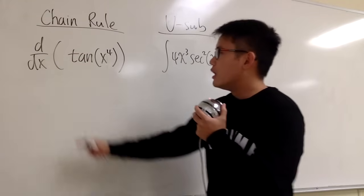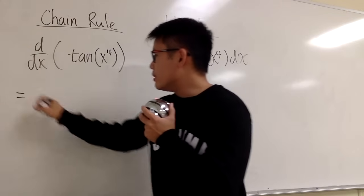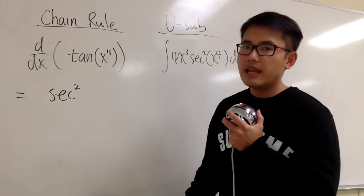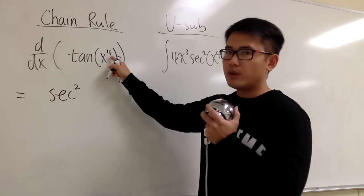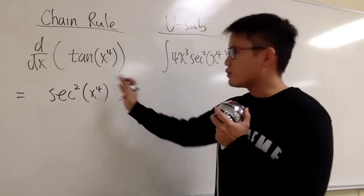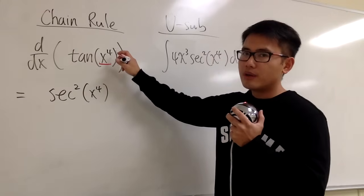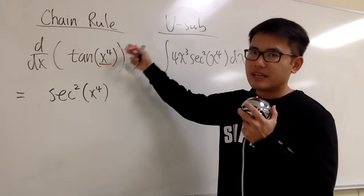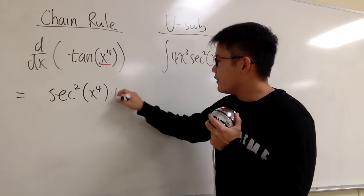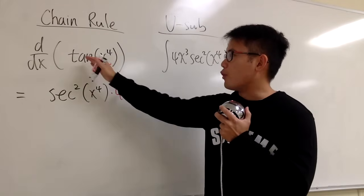Let's focus on this one right here. We're going to first take the derivative of tangent of x to the fourth power. We have to remember that the derivative of tangent is secant squared. The inside function is x to the fourth power, so we have secant squared of x to the fourth power. The chain rule tells us we have to multiply by the derivative of the inside function. Derivative of x to the fourth power is 4x to the third power, so we multiply by 4x to the third power. That's the chain rule — that's the derivative of tangent of x to the fourth power.